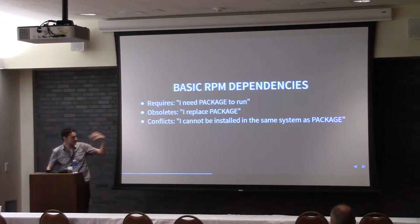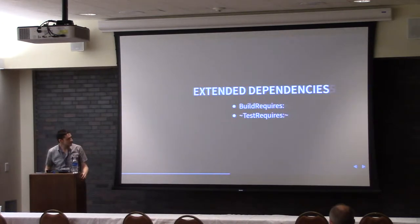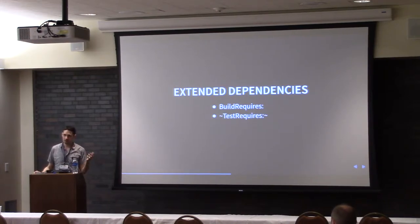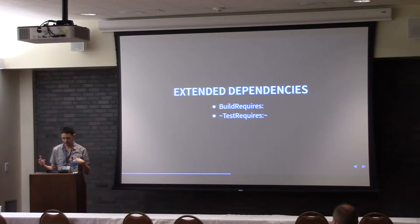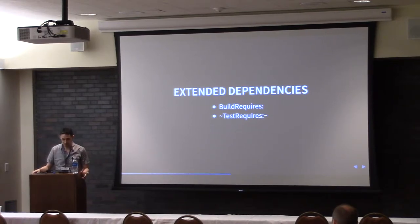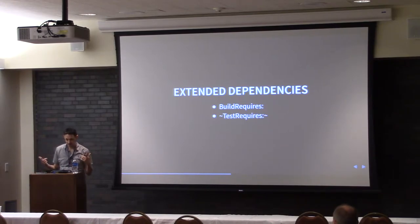Basic RPM dependencies: you have requires, obsoletes, conflicts — you want to say this package replaces this one. They're all sensible ideas, but the way they interact gets interesting. There's also build requires, which covers when I need a package installed to build something. But there are a lot more subtle interactions between packages that we just don't really have tags to capture. So we've started doing other things to fake it rather than actually getting good data.